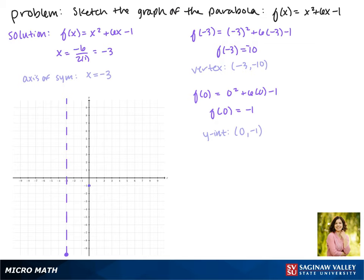That is here on our graph, and because of the symmetry of the parabola, we know that the point (-6, -1) will also be on the parabola.